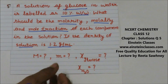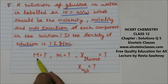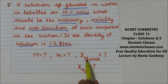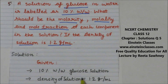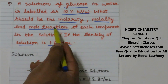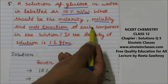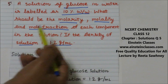Our aim is to find the molarity, molality, and mole fraction of glucose as well as the mole fraction of water. Given: 10 percent weight by weight glucose solution and density of solution is 1.2 gram per mL. We will first find the mole fraction of each component — mole fraction of glucose and mole fraction of water.